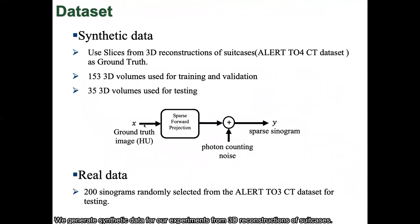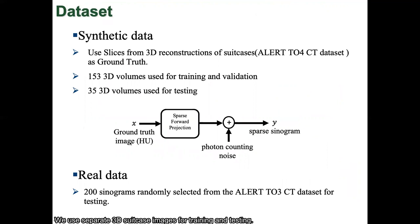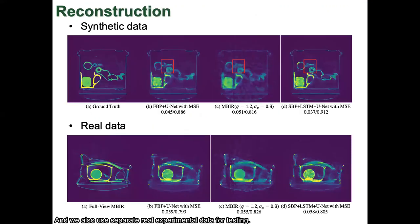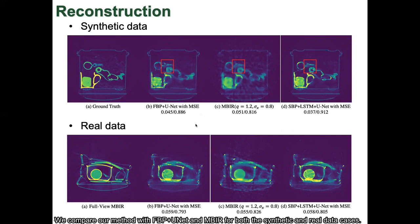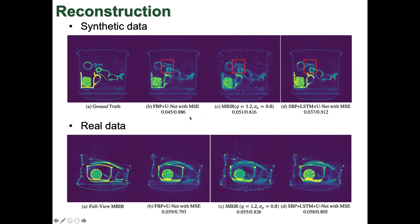We generate synthetic data for our experiments from 3D reconstructions of suitcases. We use separate 3D suitcase images for training and testing, and we also use separate real experimental data for testing. Slide 11 presents a sample of our results. We compare our method with FBP-UNet and MBIR for both the synthetic and real data cases.